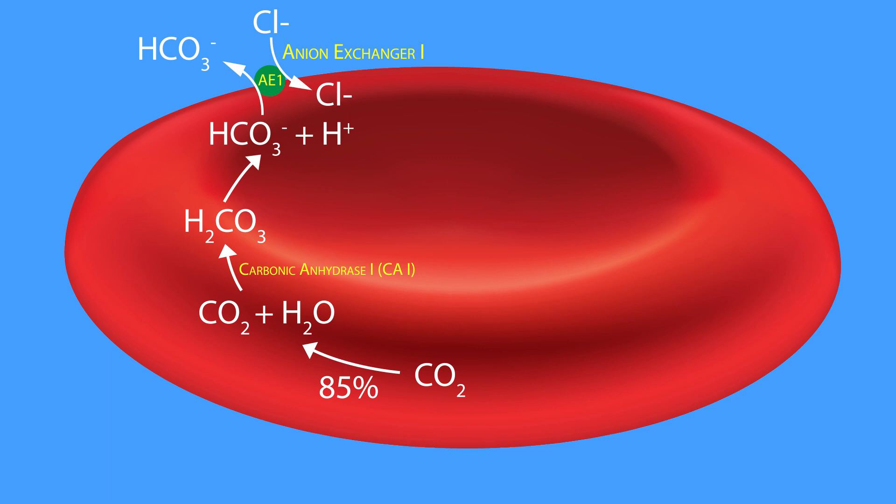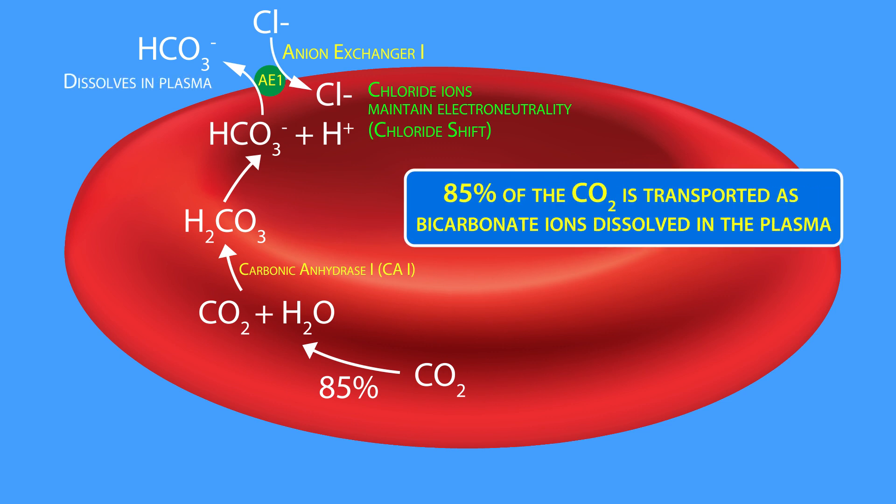Also, it's important to note that the transport of chloride ions into the cell helps maintain the electroneutrality of red blood cells. This is often referred to as the chloride shift. After being transported out of the red blood cells, the bicarbonate ions readily dissolve in the plasma. So, about 85% of the total carbon dioxide transported throughout the circulatory system is transported as bicarbonate ions dissolved in the plasma.